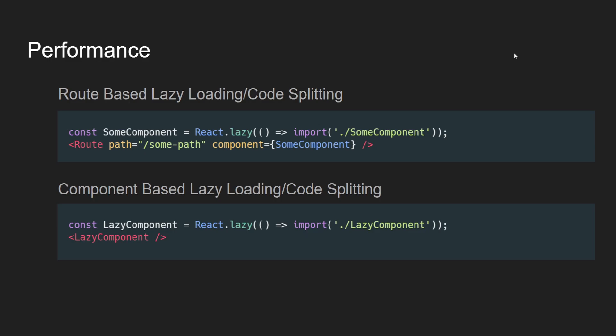The first item to cover here is route-based lazy loading and code splitting. This technique boosts application performance by dynamically loading only the components required for the active route, not loading other route components not yet accessed by the user. This reduces the initial load time and decreases bandwidth usage, especially for mobile devices on mobile networks.